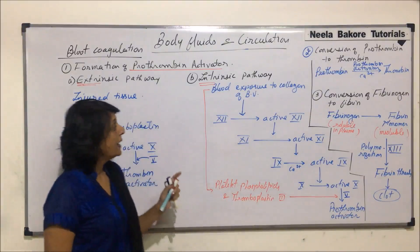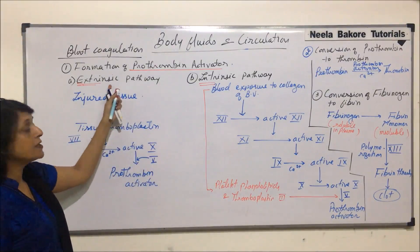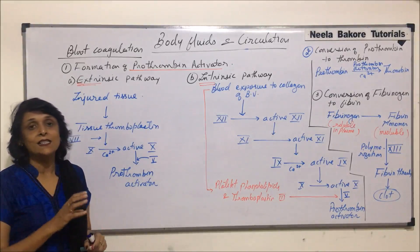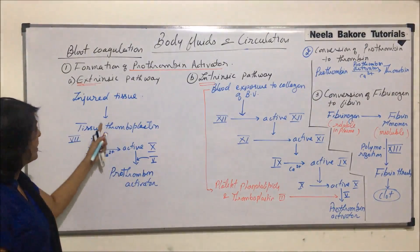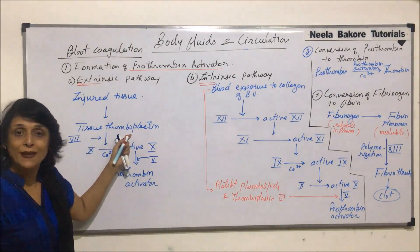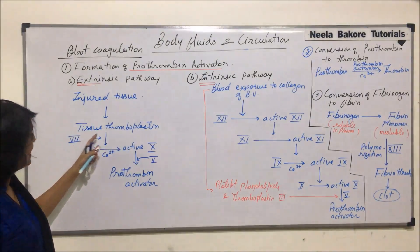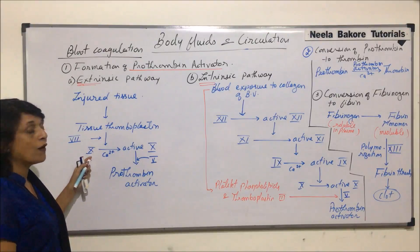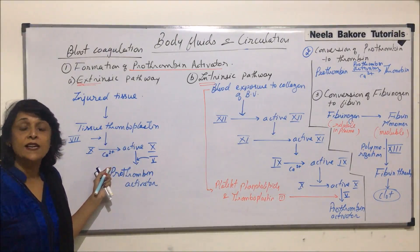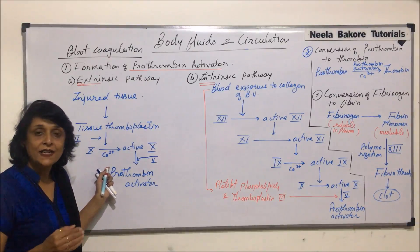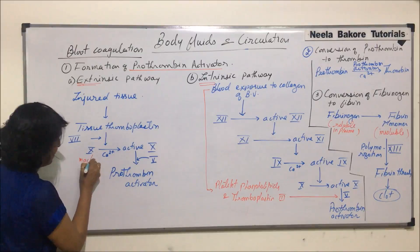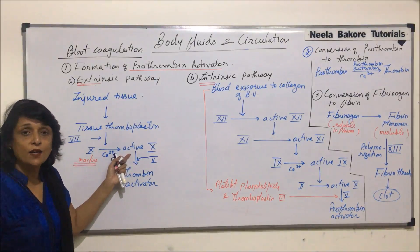The extrinsic pathway starts with injured tissue. Wherever there is an injury, that is what starts the process of blood clotting. From the injured tissue, a substance called tissue thromboplastin is released. In the presence of factor seven, this helps in the conversion of factor 10 into its active form. All these factors are present in their inactive form in our plasma and get activated only when clotting has to take place.